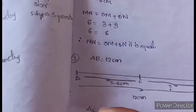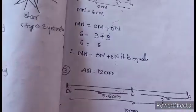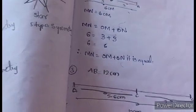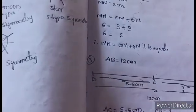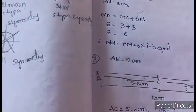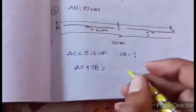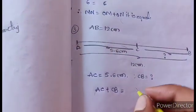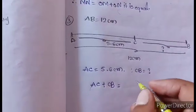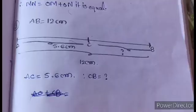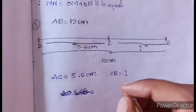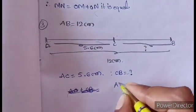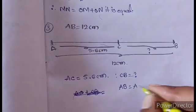We have AC line of 5.6 cm. AC plus CB equals AB. The total line AB is equal to AC plus CB. We already have AB. We will find out CB.